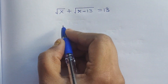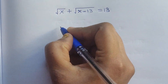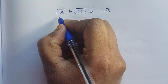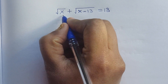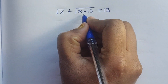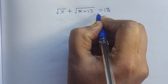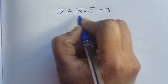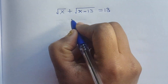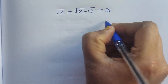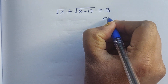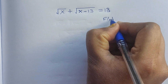Hello everyone, welcome back to my channel. How do we solve square root of x plus square root of x minus 13 equal to 13? In this problem we have to find the x value.